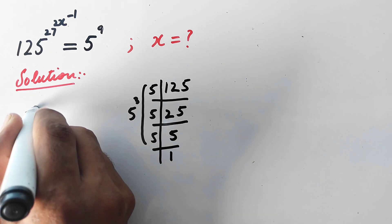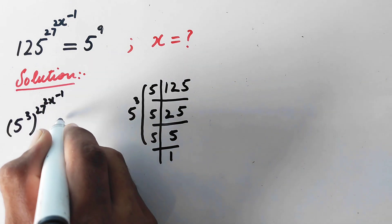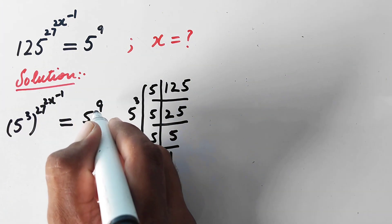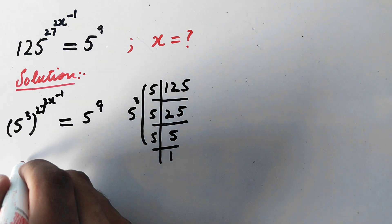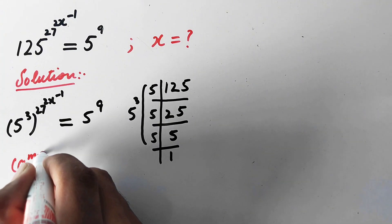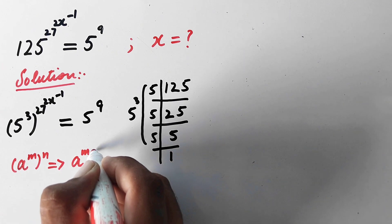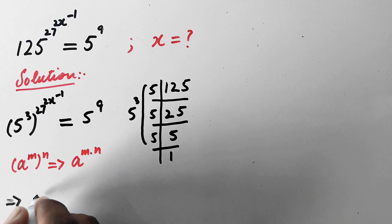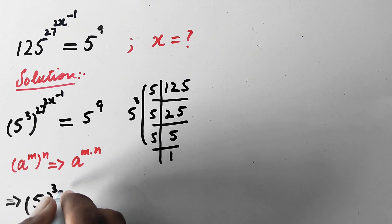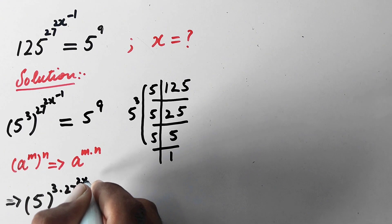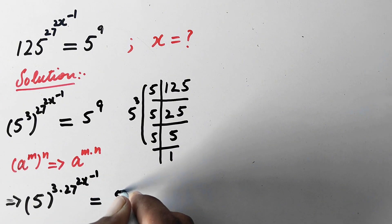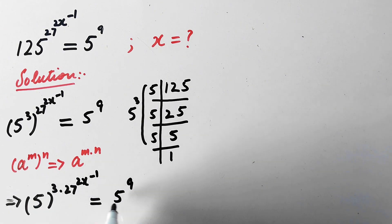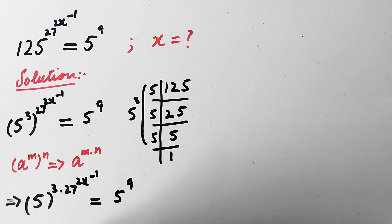So here we can write 5 raised to power 3, raised to power 27 raised to power 2x, raised to power minus 1, equals 5 raised to power 9. Here we will apply a rule of exponents: a power m power n can be written as a power m times n. So now we can write 5 power 3 times 27 power 2x power minus 1 equals 5 power 9. Now we can see that the base on both sides is the same, so we can compare the powers: 3 times 27 power 2x minus 1 is equal to 9.